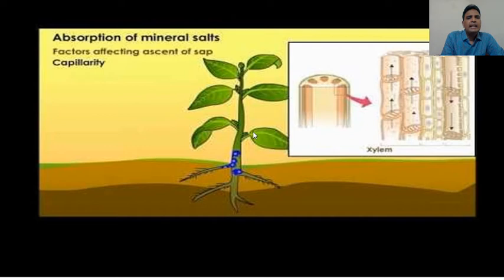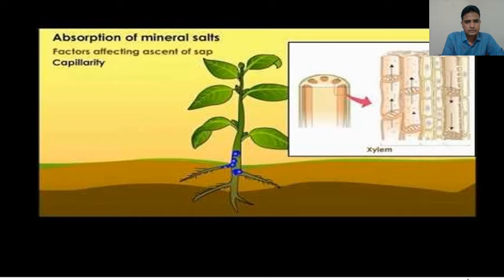Now my students, absorption of mineral salts. The absorption of salt is independent of the absorption of water — water and minerals are not absorbed together; they are absorbed separately. Salts are not absorbed as molecules but as ions. Potassium nitrate (KNO3) does not enter the root as such, but as K+ (potassium ions) and NO3- (nitrate). Sodium chloride (Na+, Cl-) enters into the root by diffusion. The ions move from a region of higher concentration towards a region of lower concentration — they move according to the concentration gradient.